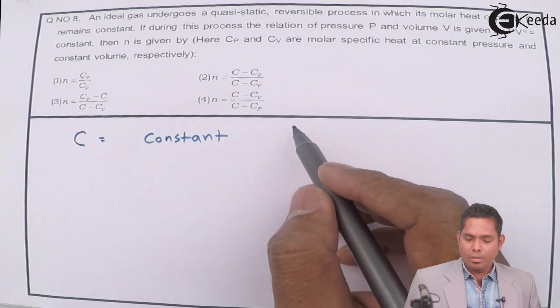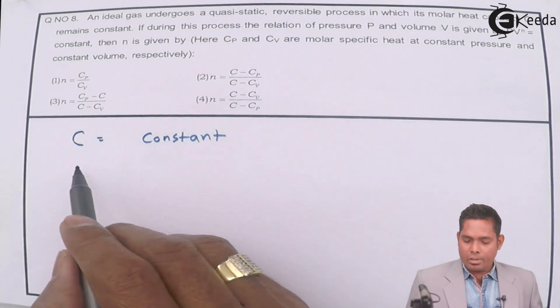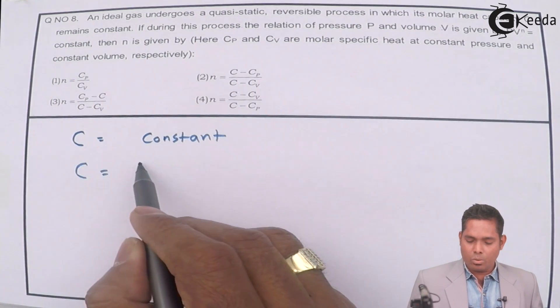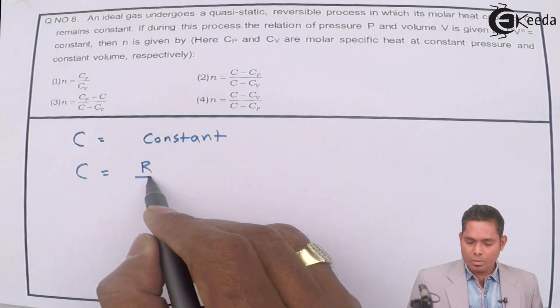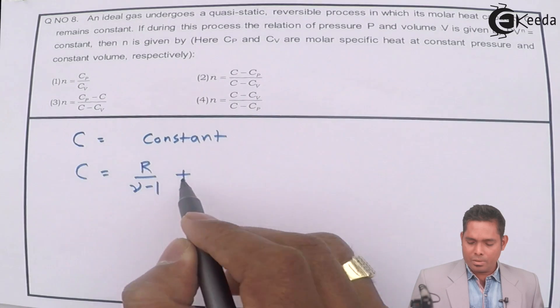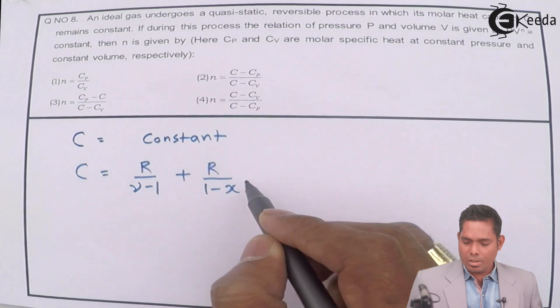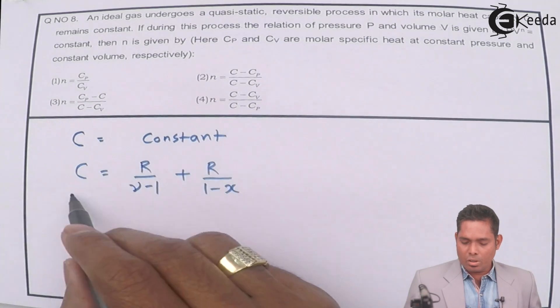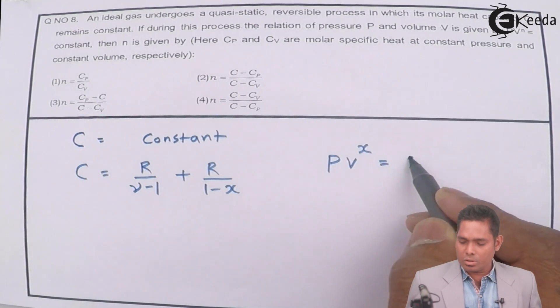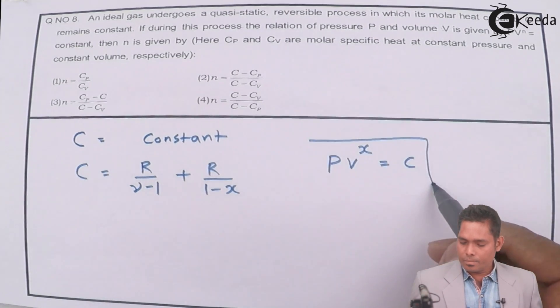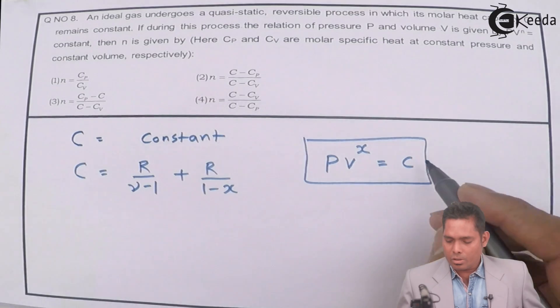Molar heat capacity for any quasi-static reversible process C, in general, we have the equation C equals R divided by gamma minus 1 plus R divided by 1 minus X. This equation is the molar specific heat for the process PV raised to X is constant. This is a constant, this is an equation, and this is a molar specific heat.